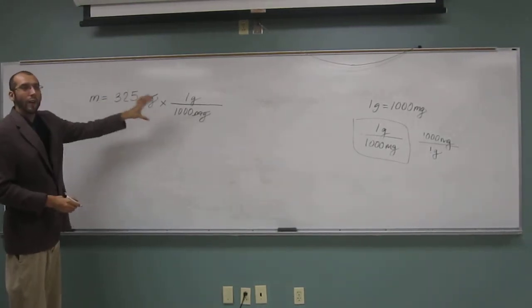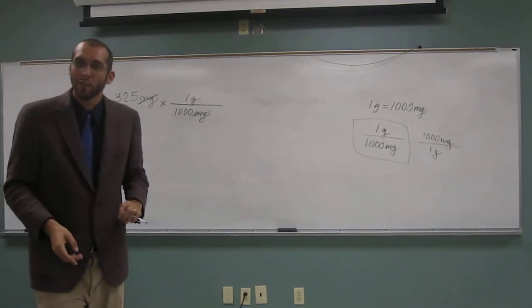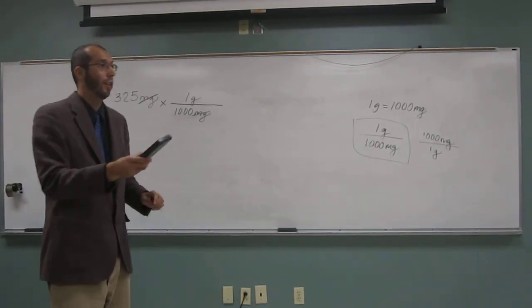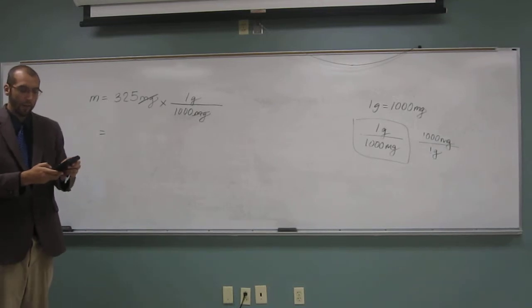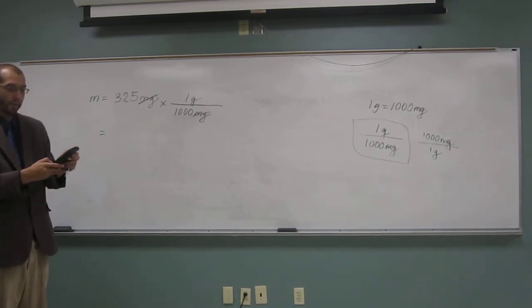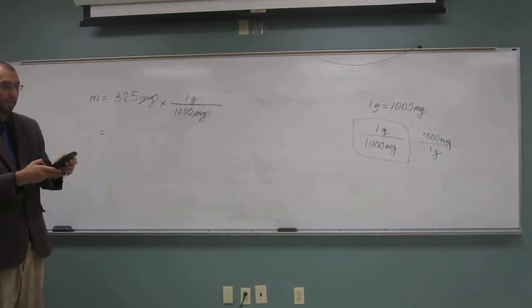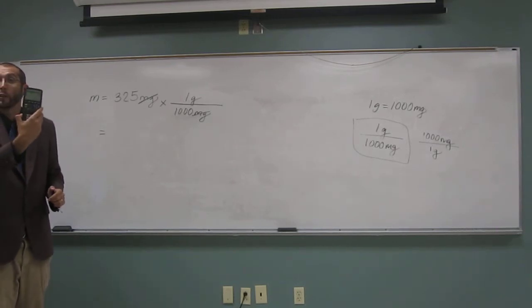So 325 divided by 1,000. If you can't do this in your head, feel free to get your calculator out. So let's all do it together. 325 divided by 1,000, and 0.325.